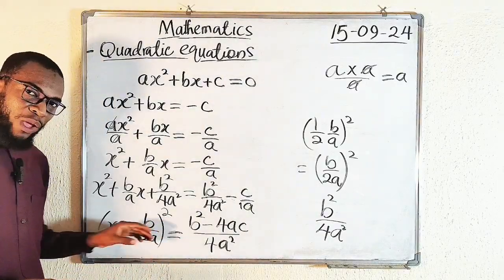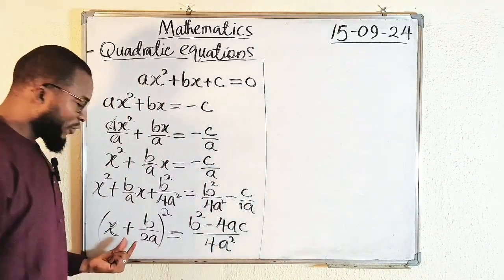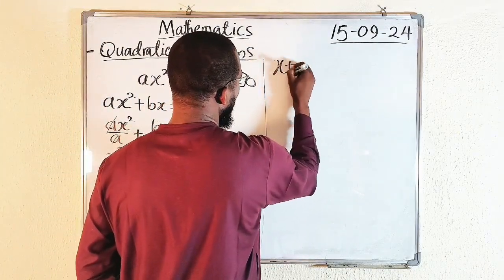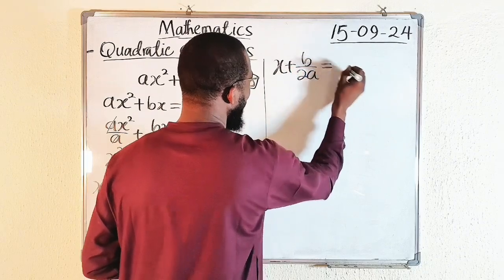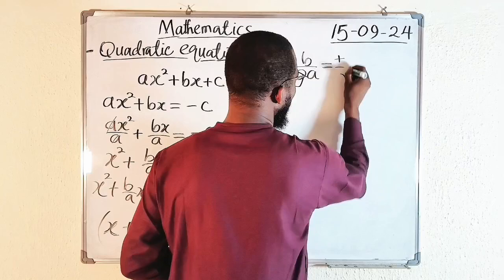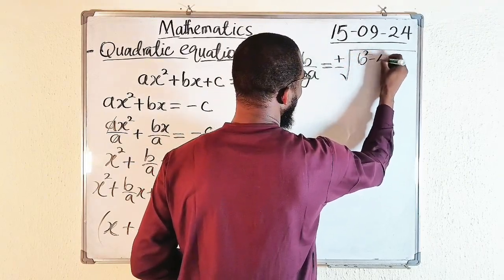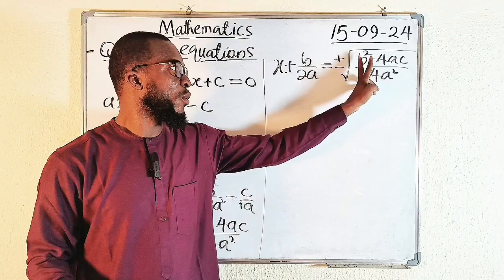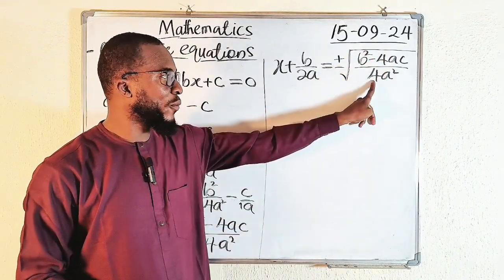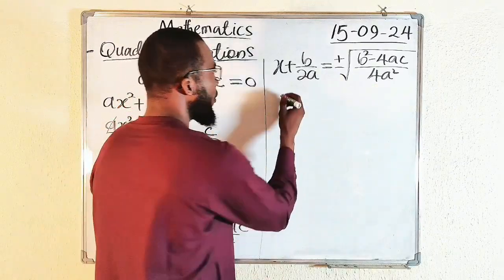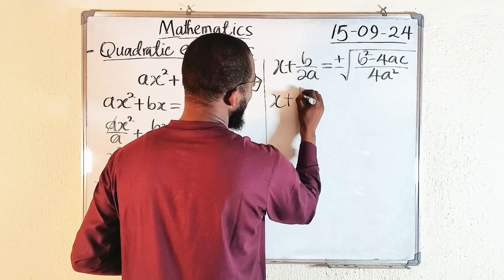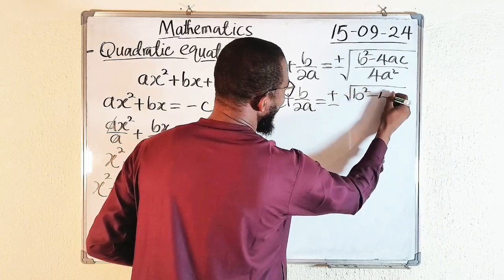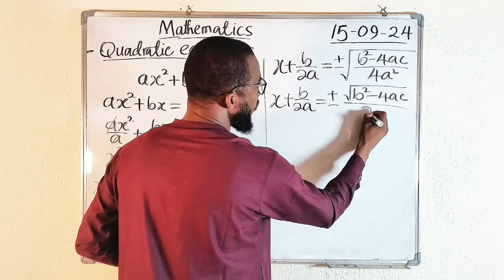Now to clear this power of 2, we are going to take square root of both sides. If you take square root of the left-hand side, the power of 2 will go, leaving x + b/2a. And this is equal to ±√(b² - 4ac)/4a². You cannot easily take square root of the numerator, but you can take square root of the denominator because square root of 4 is 2, square root of a² is a. So we have x + b/2a = ±√(b² - 4ac)/2a.